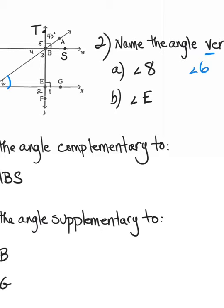How about angle E? The angle that opens in the opposite direction of angle E would be angle one — those are vertical angles. One important property to remember is that vertical angles are always congruent, meaning they have the same value. My symbol for congruent is the equal sign with a little squiggle on top.